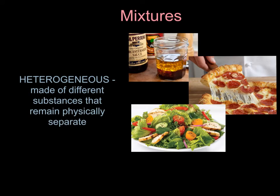The other type of mixture is a heterogeneous mixture. Heterogeneous mixtures are made of different substances that remain physically separate. For example, Italian salad dressing separates into a layer of oil and a layer of vinegar. Pizza is a heterogeneous mixture — when you cut into a piece of pizza, you'll see the crust, the sauce, the cheese, and the toppings all separated into layers. We see the same thing with salad, where we can pick out all the different parts that make up the salad.